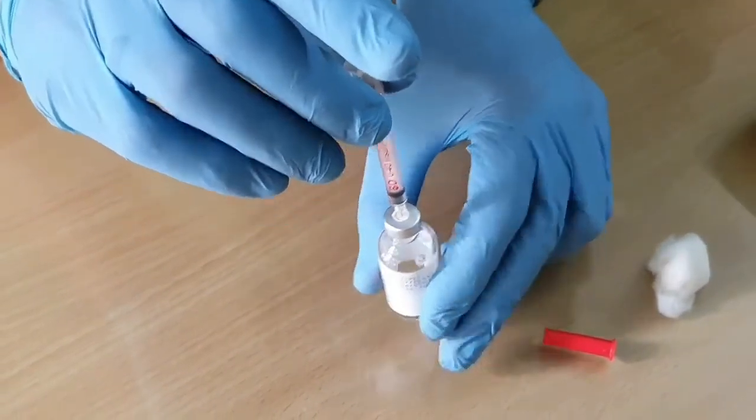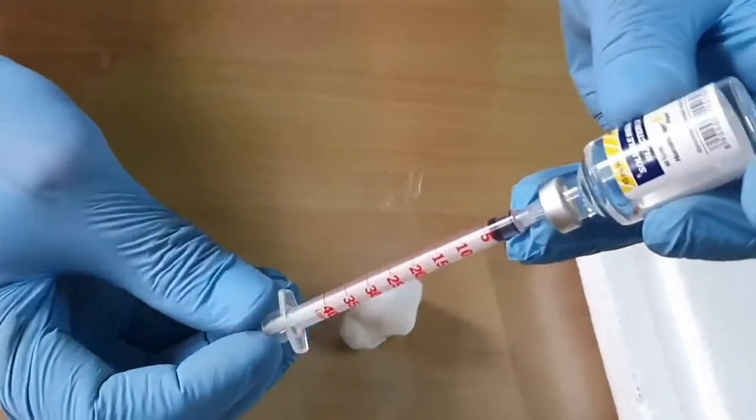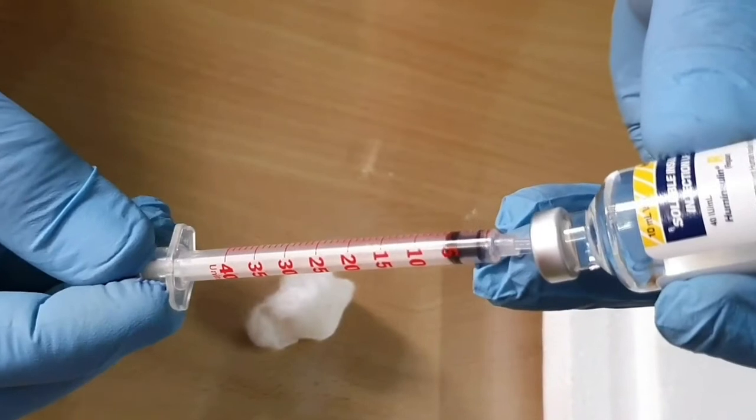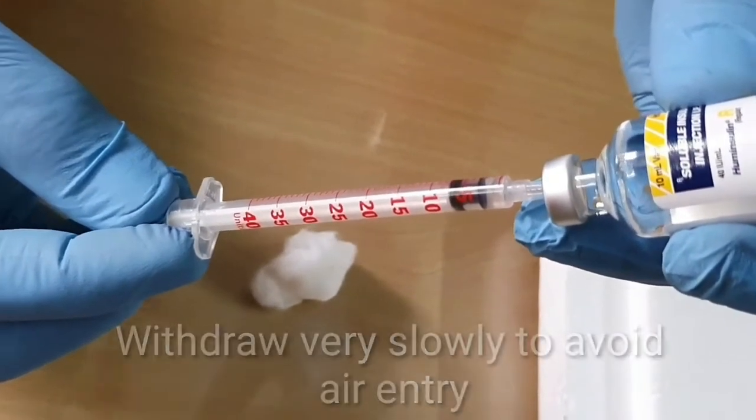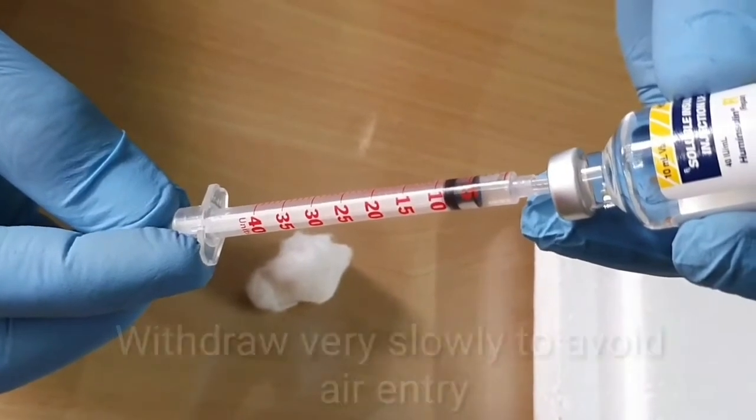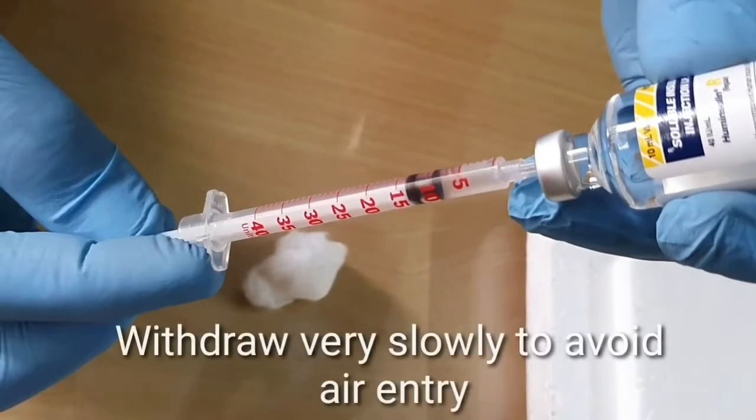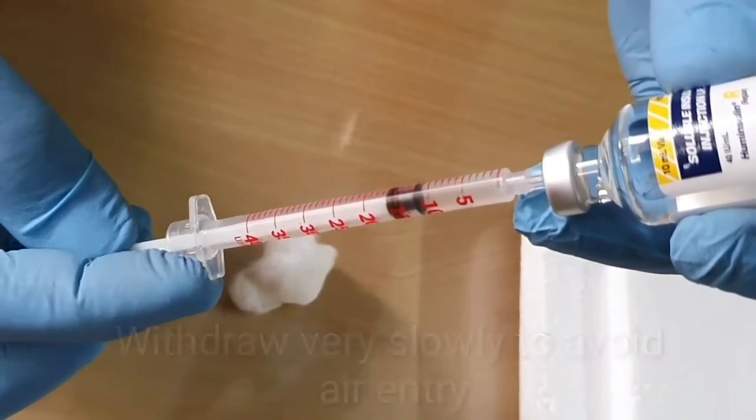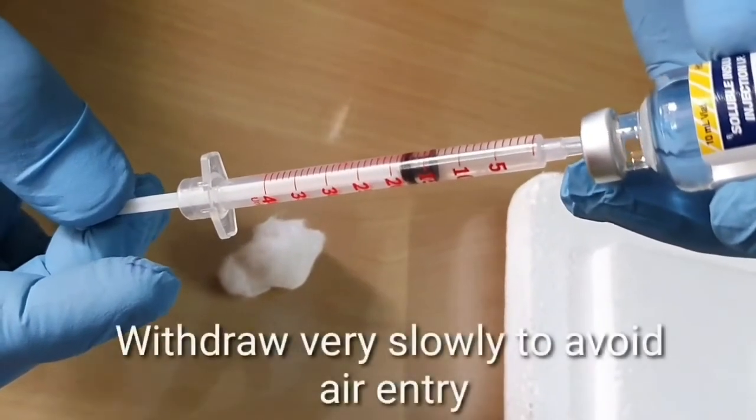Now you hold the bottle upside down and slowly withdraw. When you withdraw, it should be very slow because otherwise there can be a chance of air entering into the syringe. Slowly, see, now I've got to 5, 6, 7. I've reached 10, and now 11, 12, 13, and 14.